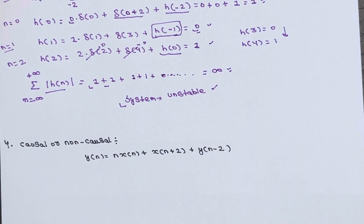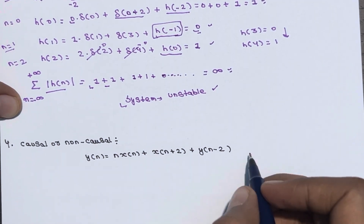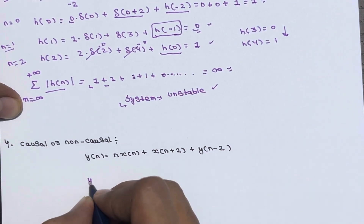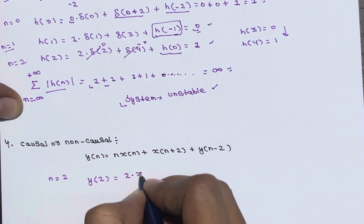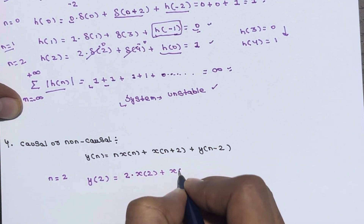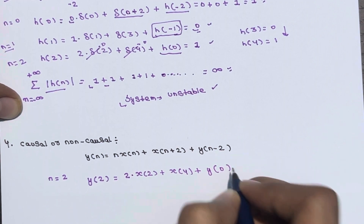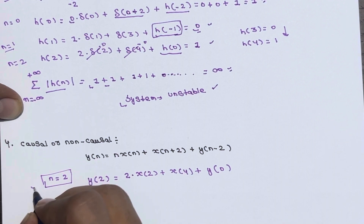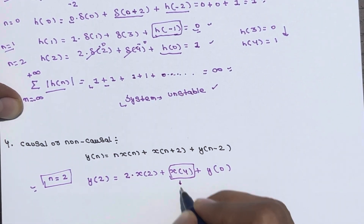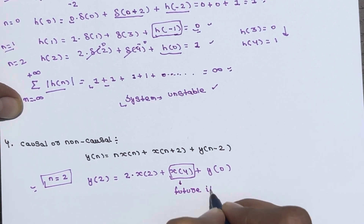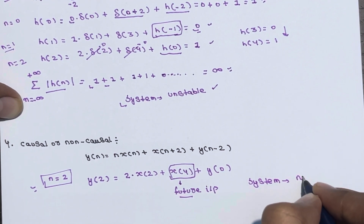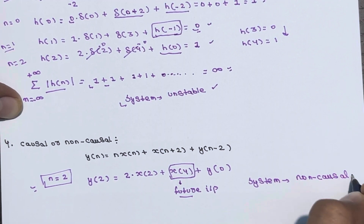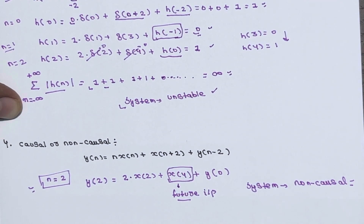Now checking for causal or non-causal. The equation is y(n) = n·x(n) + x(n+2) + y(n−2). At the instance n = 2: y(2) = 2·x(2) + x(4) + y(0). We are at n = 2, but x(4) is a future input — future input is required. If future input is required, the system is a non-causal system. Overall: the system is linear, unstable, non-causal, and time variant.